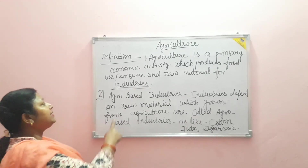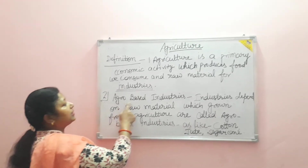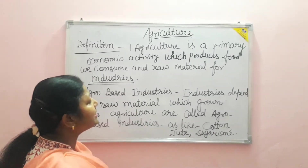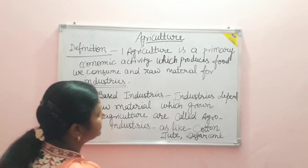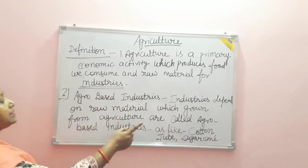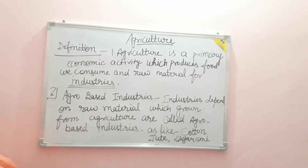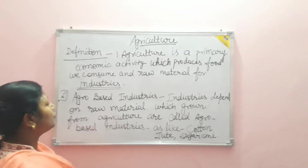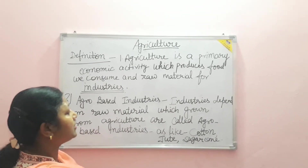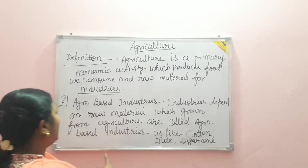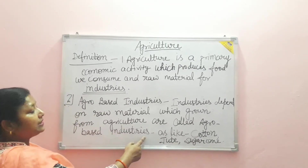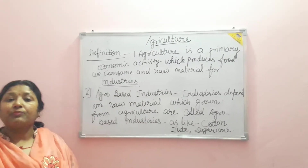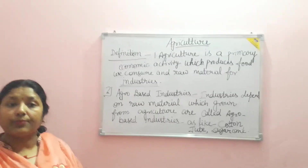The second definition relates to agro-based industries. These are industries that depend on raw materials which are grown from agriculture.